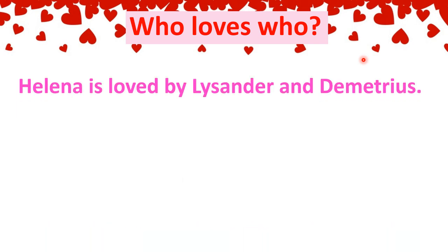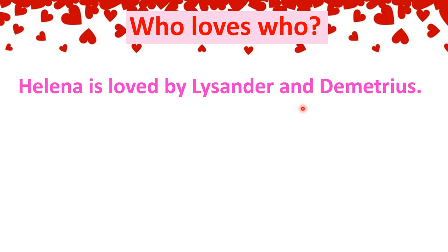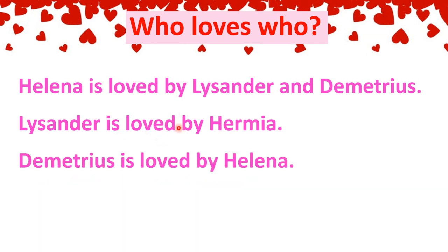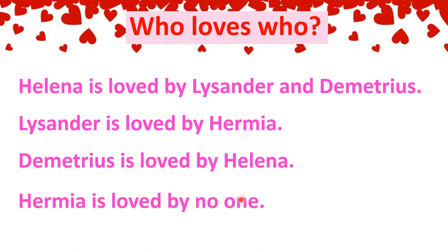At this point I think it's really important that we clarify who loves who, because it's changed quite a lot since the beginning of the play. So Helena is now loved by Lysander and Demetrius because of the love potion. Lysander is still loved by Hermia. Demetrius is still loved by Helena, however she seems to be a little bit angry with him. And Hermia is loved by no one at this point.